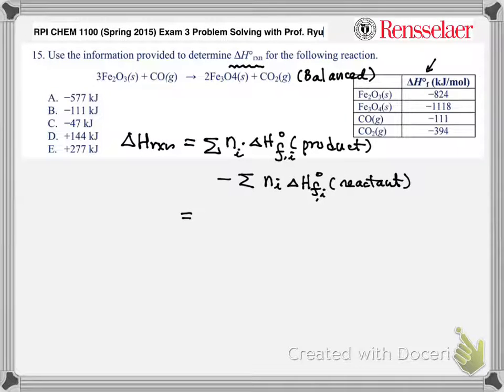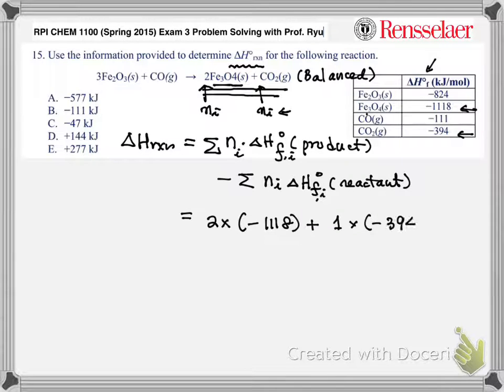Now let me show you how it works out. The products—these are the products—and this is essentially ni. Product-wise, I need 2 times Fe3O4, which is this one, which is -1118, plus in this case this is 1, so 1 times CO2, which is a product, which is -394. So I'm done with this part.